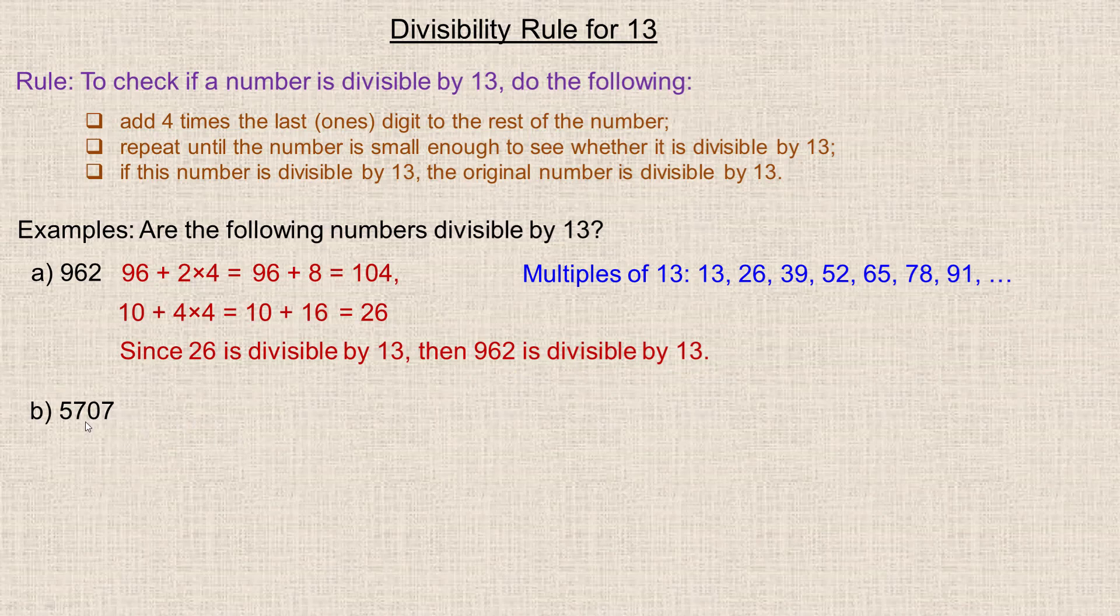So the next example is 5,707. So we would start with 570 and we add to it 4 times the 7 on the end here. 4 times 7 is 28, so 28 added to 570 is 598. Now it's probably too big to recognize that's a multiple of 13 or not. So now we would go with 59 plus 4 times the 8, which is 32, we're adding to the 59. And if you add that together, 5 and 3, well 50 and 30 is 80, and 11 more makes 91.